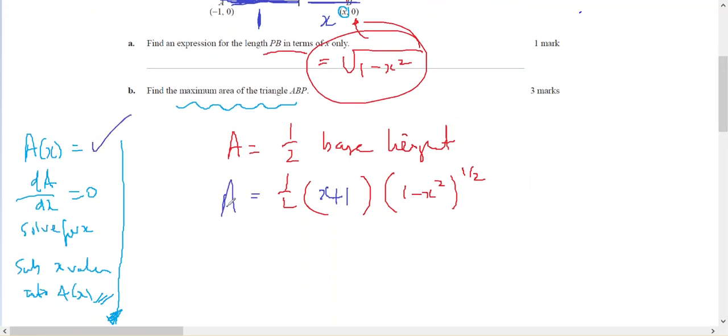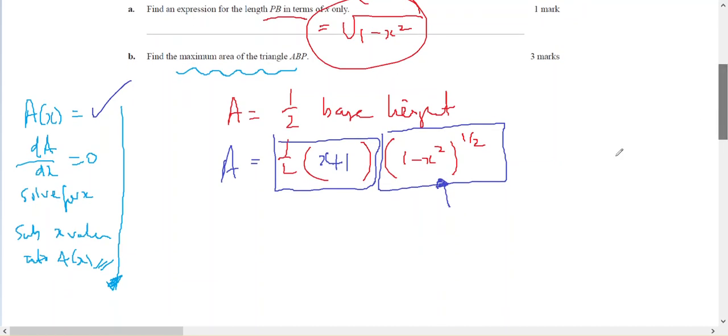I need to take the derivative. So I can see I have a product rule that also involves a chain. So u is going to be a half x plus 1, which is a half x plus a half. Therefore u dash equals a half. v is going to be 1 minus x squared to the half.